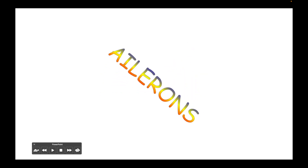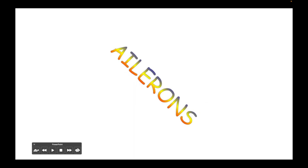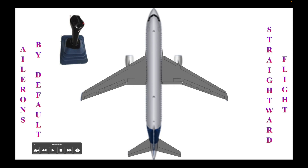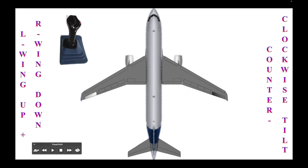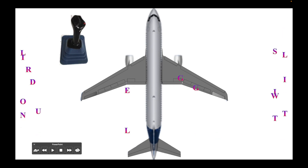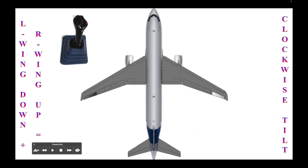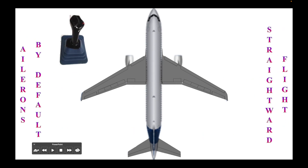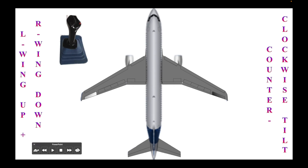The last of the three primary flight controls we will discuss is the aileron. These are wingtip elements that make the airplane tilt clockwise or counterclockwise. The pilot moves these wingtip elements by moving the side stick sideways, either to the left or to the right. Moving the side stick to the right means making a clockwise tilt, and moving it to the left will make the airplane tilt counterclockwise.